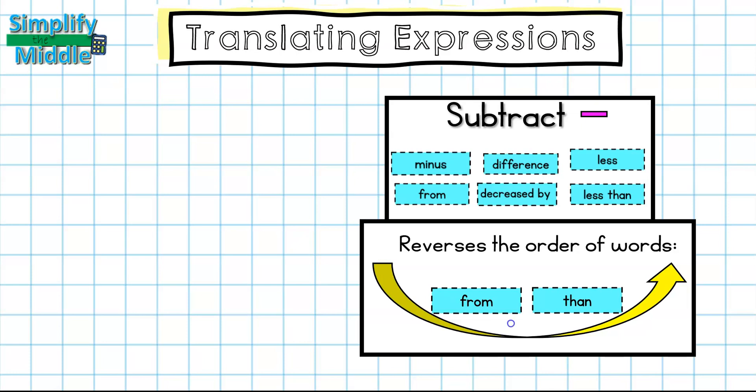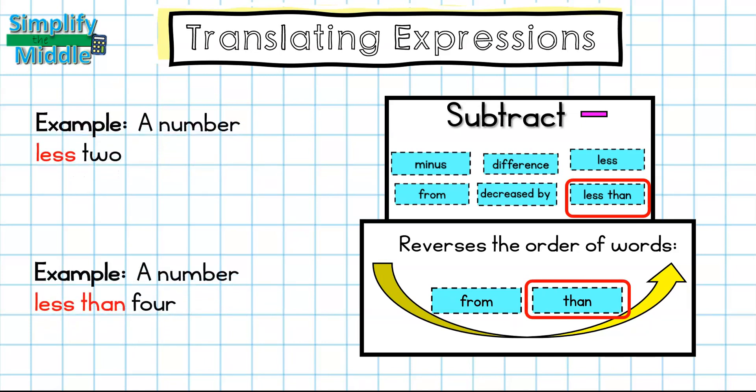Let's look at this for some examples. Here I have a number less two. Okay, so less is here for subtract. So a number, we're going to use a variable for whenever it says a number. The most common variable for expressions is n, but you could use x or any letter really. So here I'm just going to use n. So n less two. So n minus two. That one's pretty straightforward.